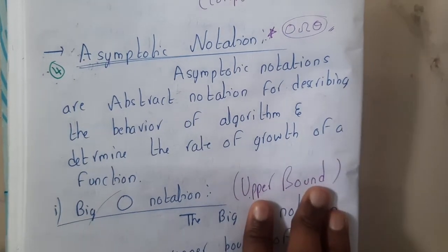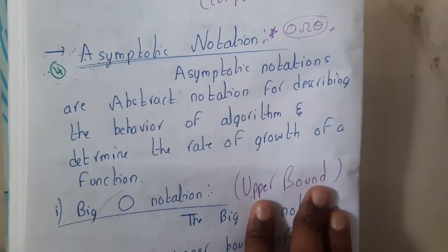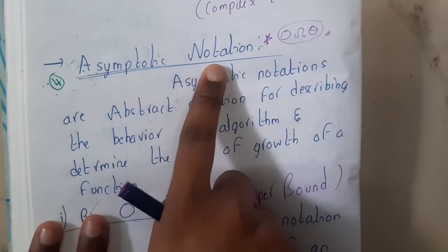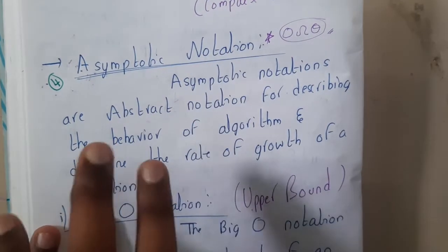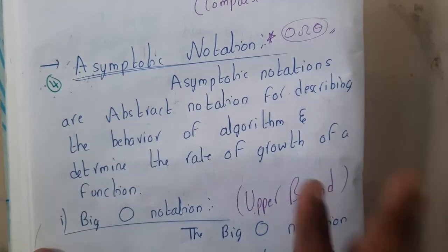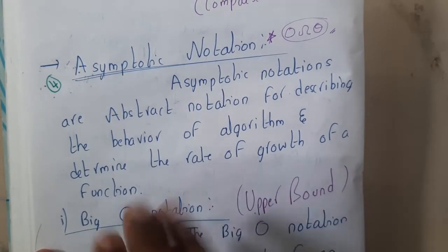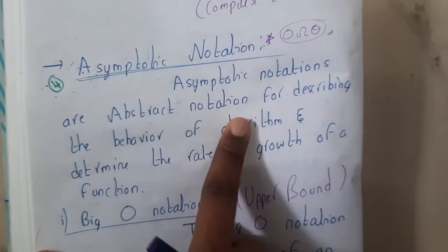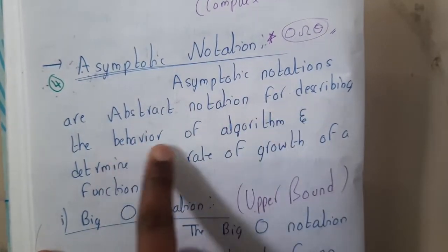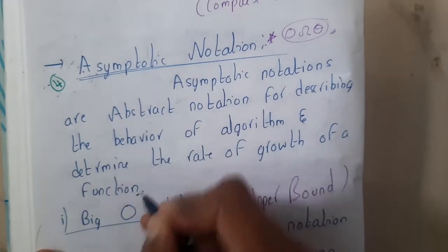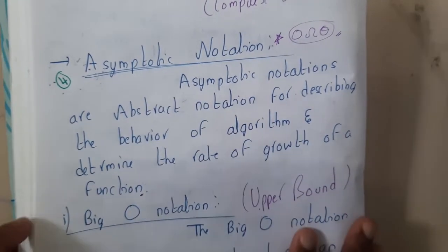Hello guys, we are back with our next lecture. The topic is asymptotic notations. In the whole subject of algorithms, the most important thing to understand is asymptotic notations. Asymptotic notations are abstract notations for describing the behavior of an algorithm and determining the rate of growth of a function.